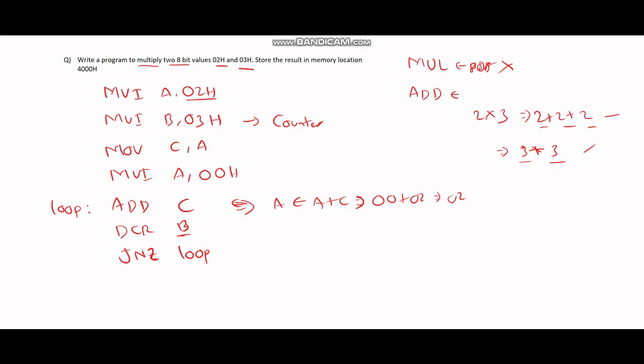Now, once we get out of this line, we have our result in the accumulator. We're going to store it in memory location 4000H and then be done with the program, then halt the program.